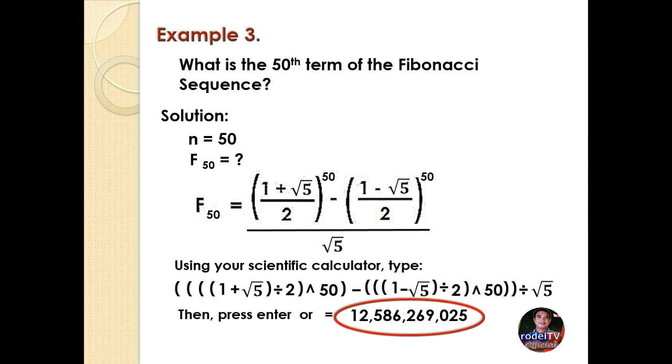So that's it. That's how we use the Binet's formula. It is very easy to use. Simply substitute the value of n to the formula, and then follow the sequence in your calculator. Presto, you already have your answer. If your answer has decimals, you simply round it off to the whole numbers.